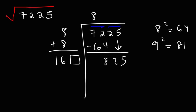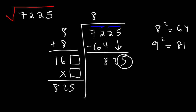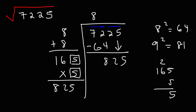160-something times something equals 825. The fact that this ends in 5 tells us the digit must be 5, because 5 times 5 is 25. So clearly this must be 5. We can check it: 165 times 5 — 5 times 5 is 25, carry the 2; 5 times 6 is 30, plus 2, that's 32, carry the 3; 5 times 1 is 5, plus 3, we get 8.